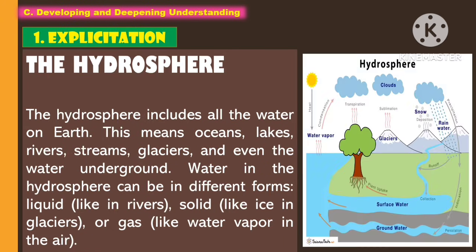Another earth system is the hydrosphere. The hydrosphere includes all the water on earth — the oceans, lakes, rivers, streams, glaciers, and even the water underground. Water in the hydrosphere can be in different forms, such as liquid like in the rivers, solid like ice in glaciers, or gas like water vapor in the air.